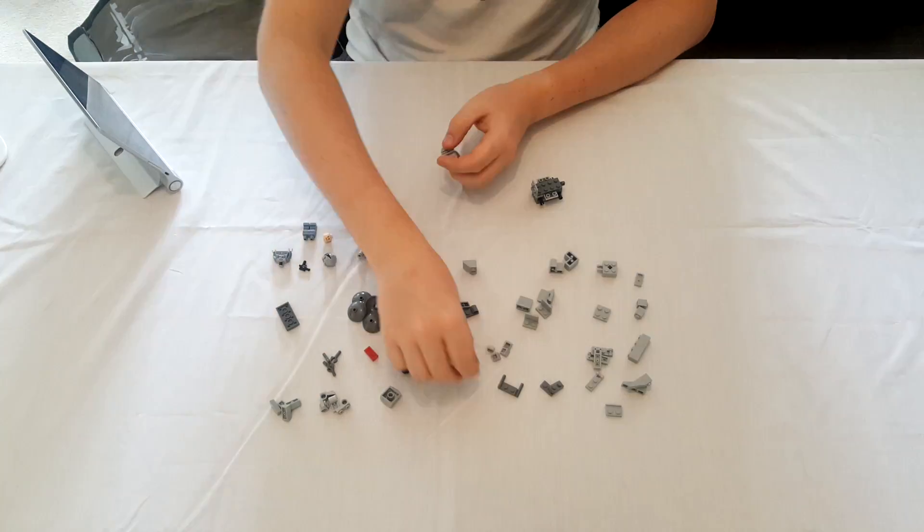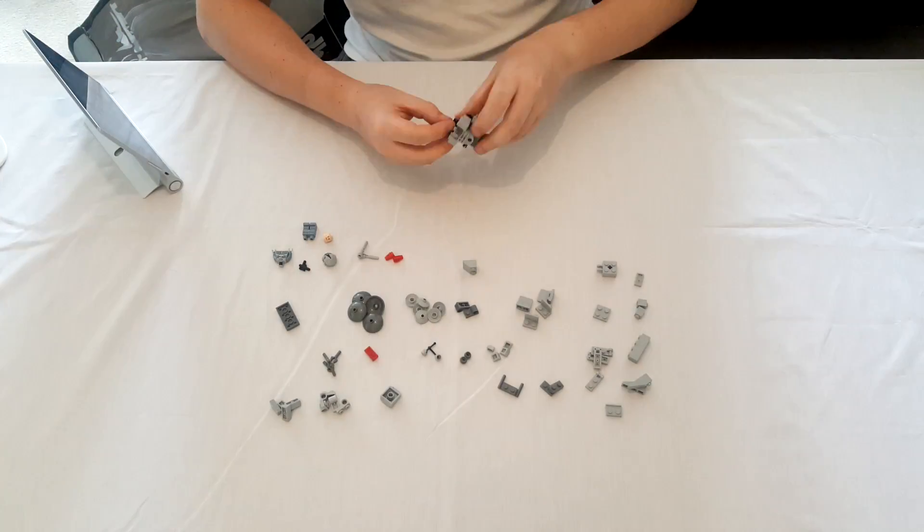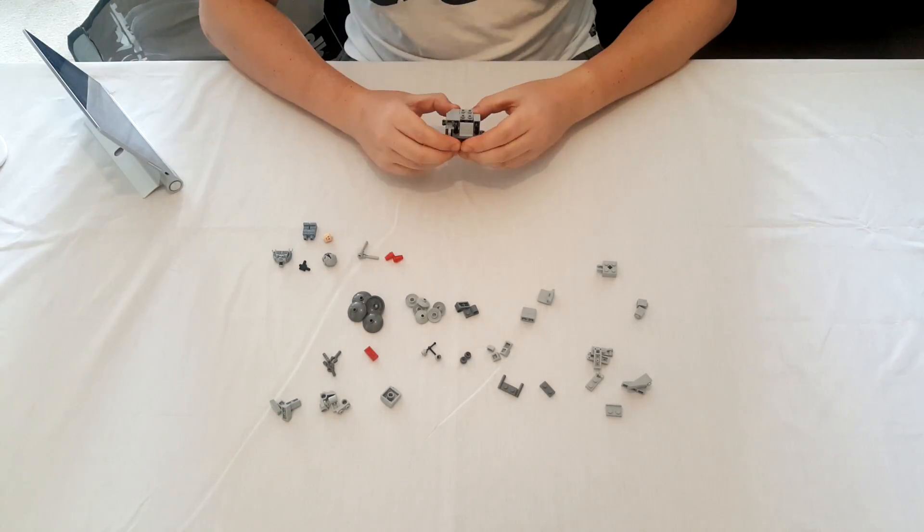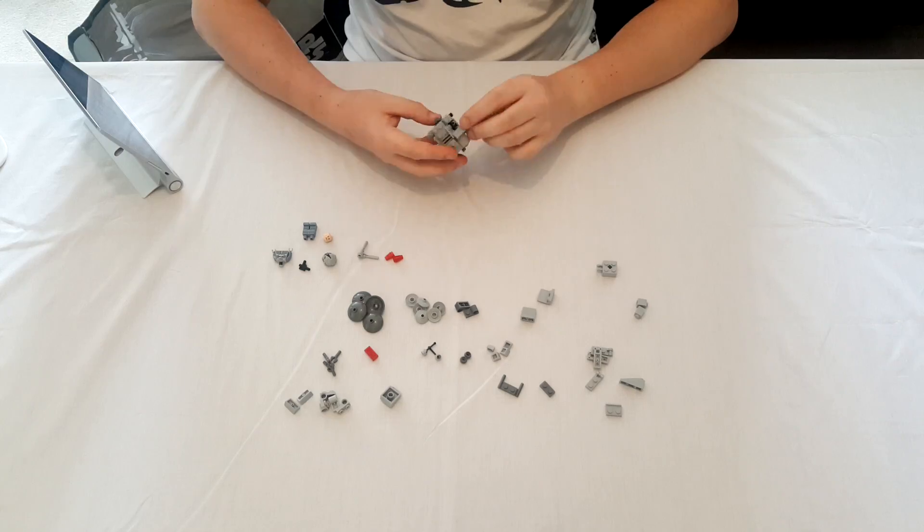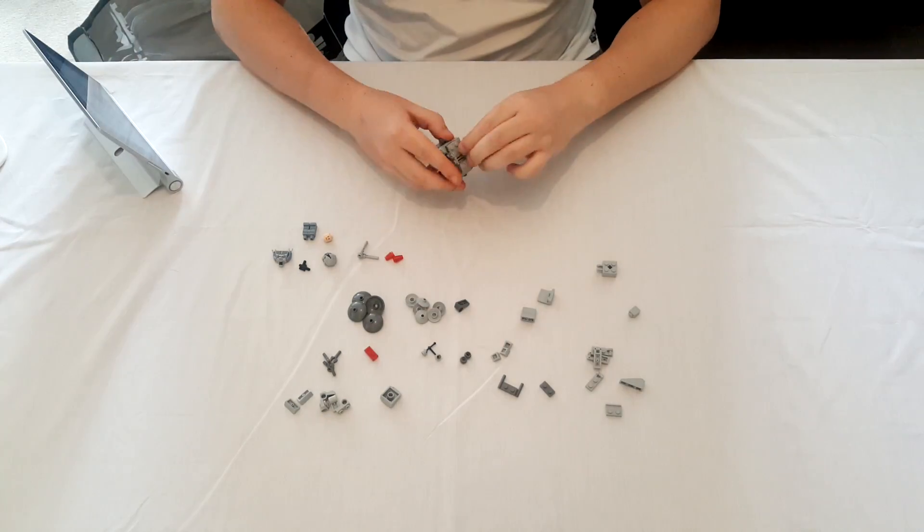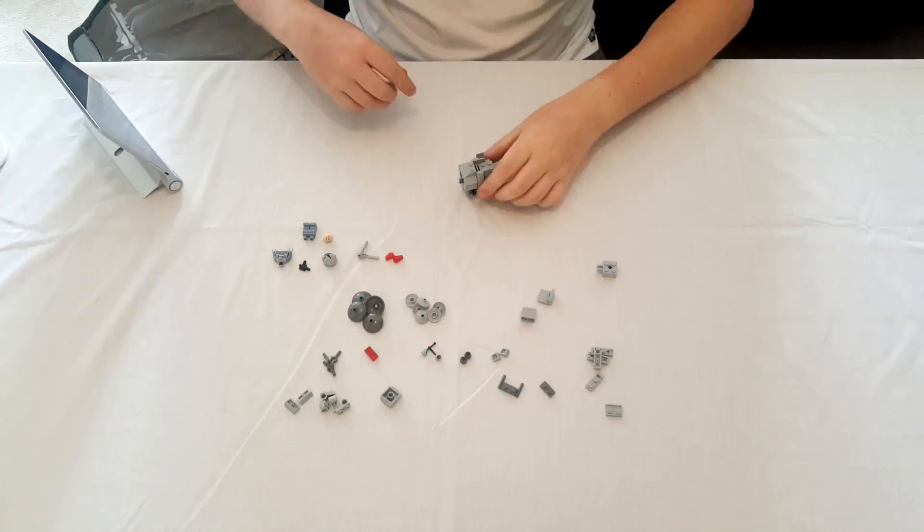The set number is 75075, it has 88 pieces, they cost about £10, and in the set we have the AT-AT vehicle and an Imperial driver.